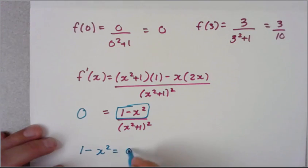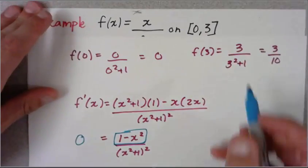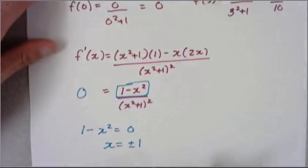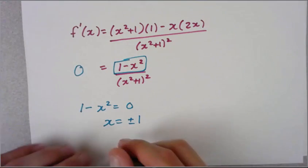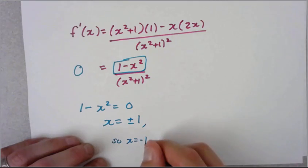That means x = ±1. We have two choices here. However, back at the beginning, our interval is from 0 to 3, so x = -1 is out.